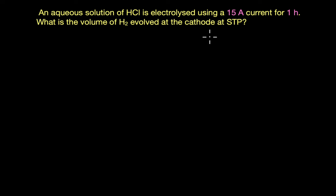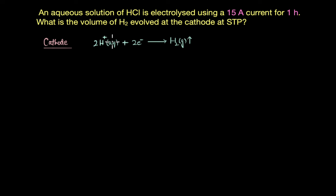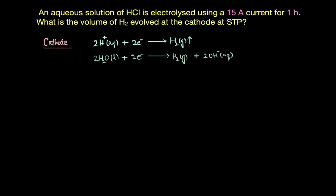In an aqueous solution of hydrochloric acid we have H⁺ ions, Cl⁻ ions, and water. At the cathode, H⁺ ions are being reduced to form hydrogen gas, but this is not the only reaction — there is a competing reaction where the reduction of water takes place. To figure out which reaction is preferred, we need to look at their electrode potentials.